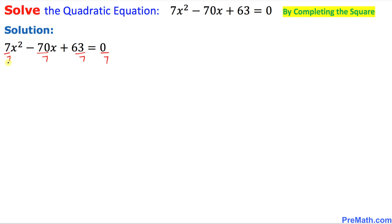So 7 divided by 7 is going to become 1x squared minus, this becomes 10x, plus 9 equal to 0. That is the very first step.